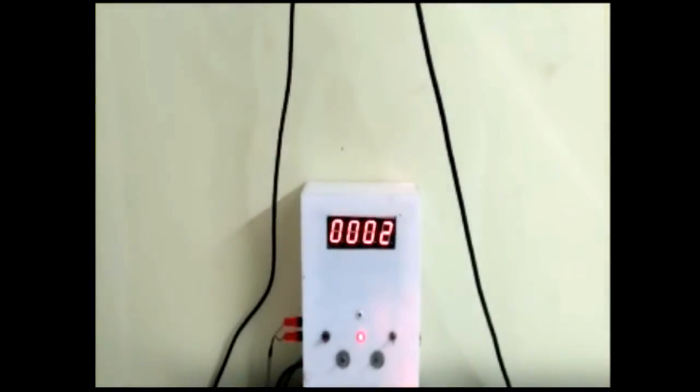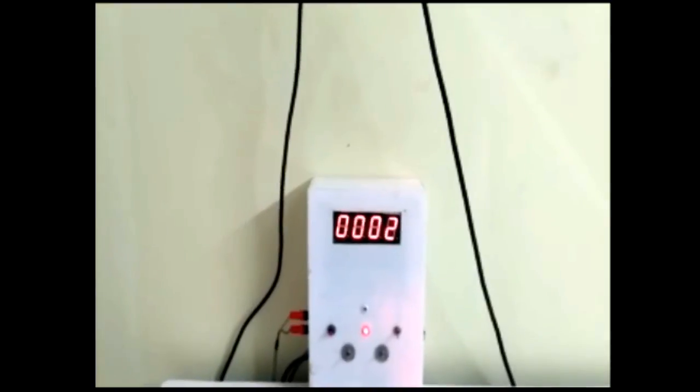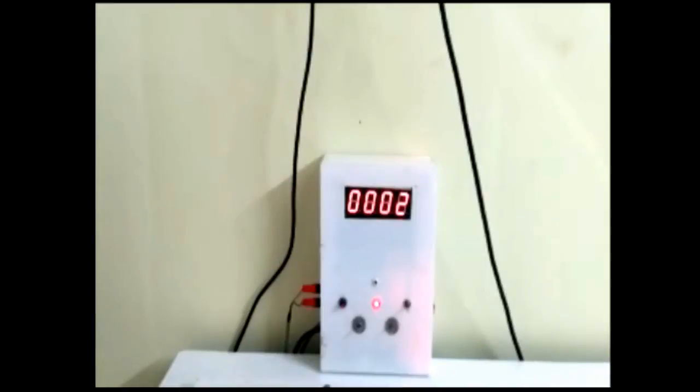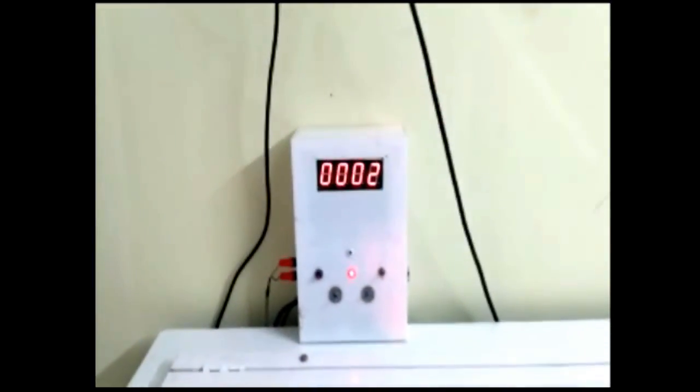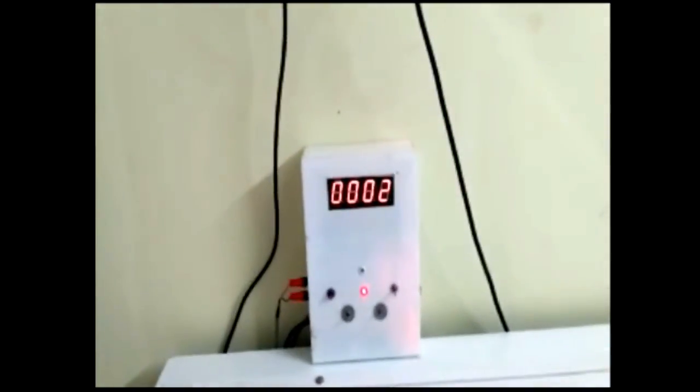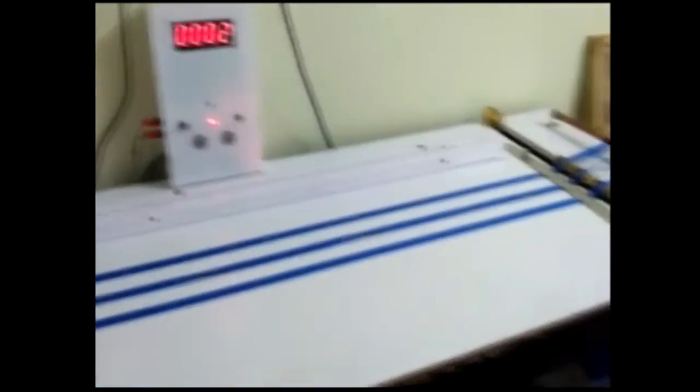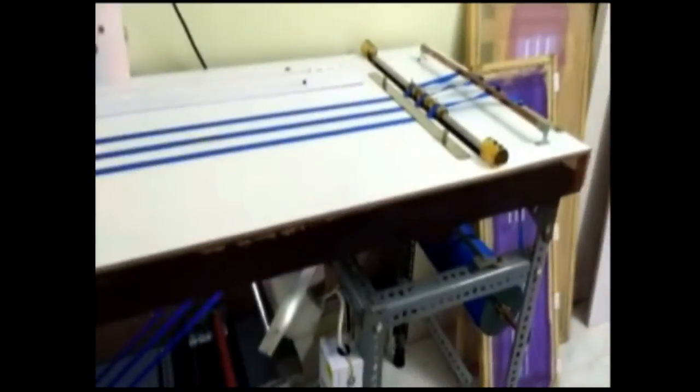You can also see there's a counter over here which shows two, meaning two sets are over. So that is six ribbons printing. At a time we can print three, so three into two is six. You can also get a count over there and you can reset the count.